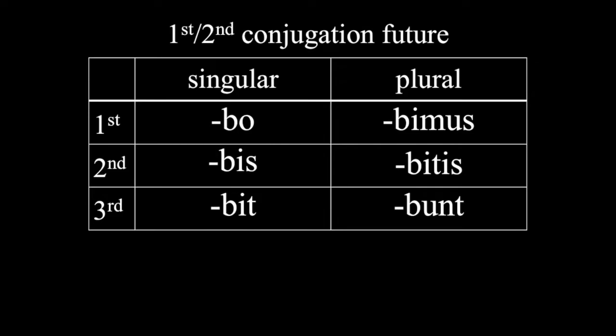They should look very familiar to you by now. Now all of the six tenses in Latin use the same endings for all conjugations except for the future tense, which uses different endings depending on the conjugation you're dealing with. And that is, frankly, a little bit annoying.